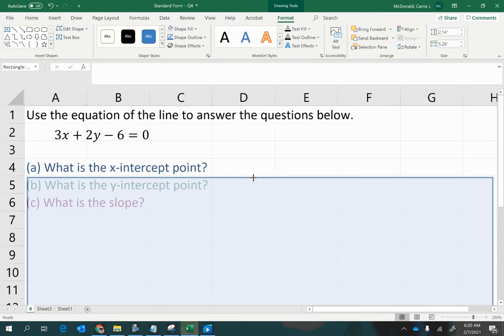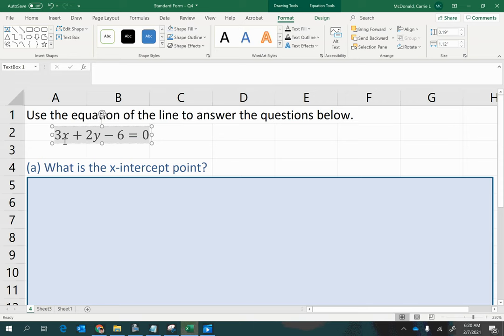We'll start with the x-intercept point. Before we get started, let's take a look at the form of the line given here. It's almost in standard form. If we just move this negative 6 to the other side of the equal sign, it'll be in standard form.